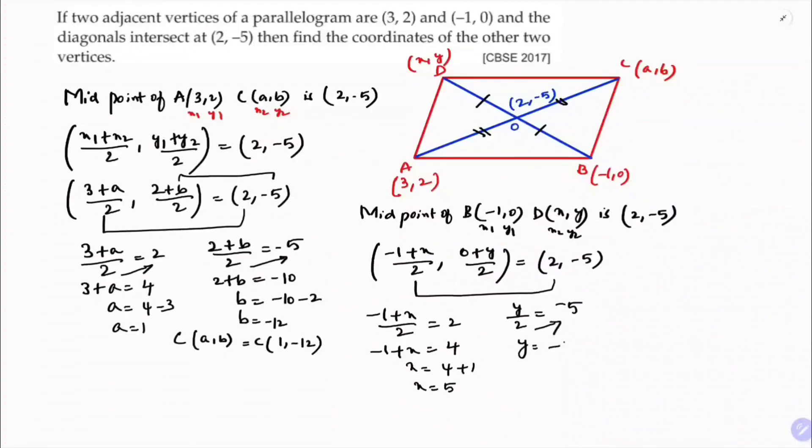So y = -10 directly, because 2 times -5. So D is (x,y). The values of D are (5,-10). So the other coordinates of the parallelogram C and D are (1,-12) and (5,-10).